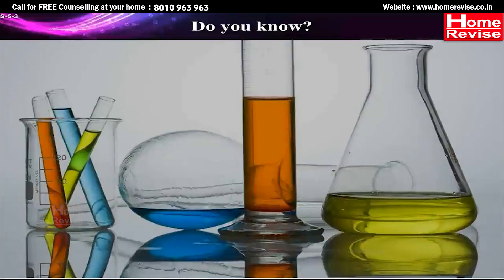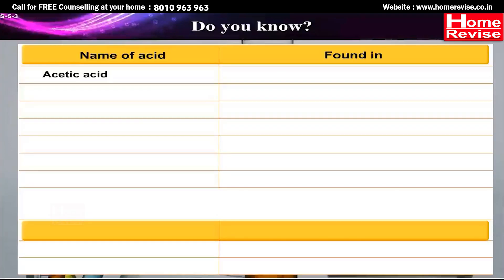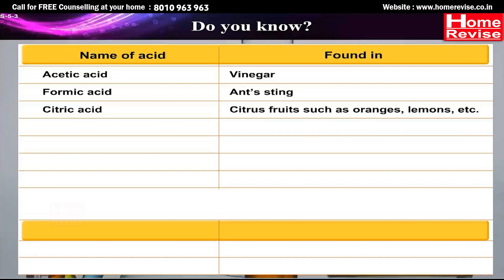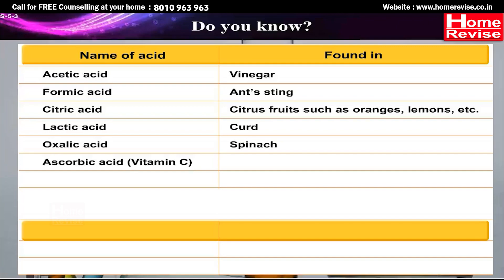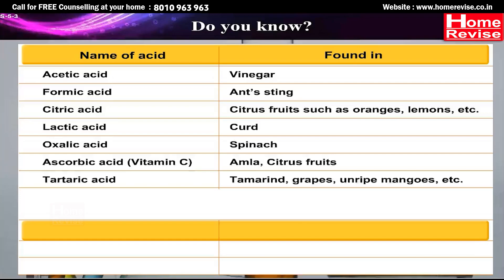Acetic acid is found in vinegar; formic acid in ant's sting; citric acid in citrus fruits such as oranges and lemons; lactic acid is found in curd; oxalic acid in spinach; ascorbic acid (vitamin C) in amla and citrus fruits; tartaric acid in tamarind, grapes, unripe mangoes etc. All the above-mentioned acids occur in nature.